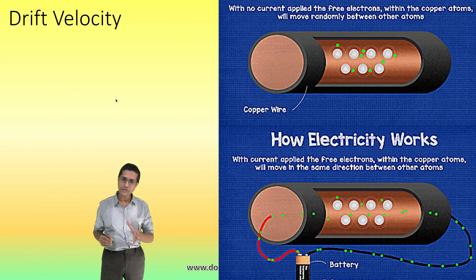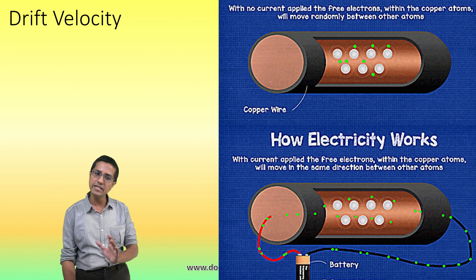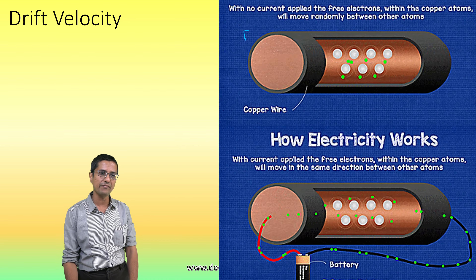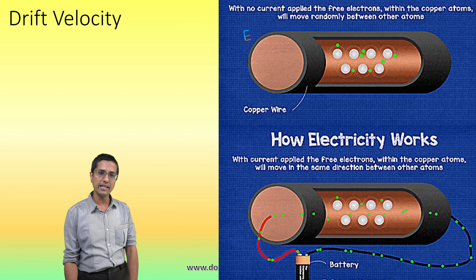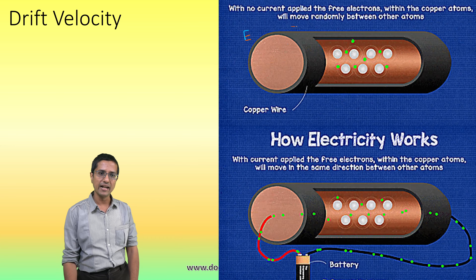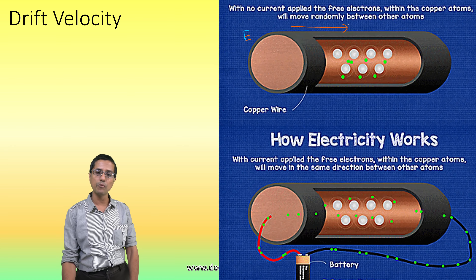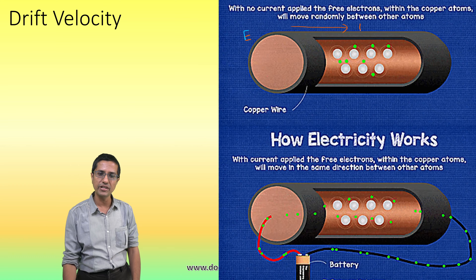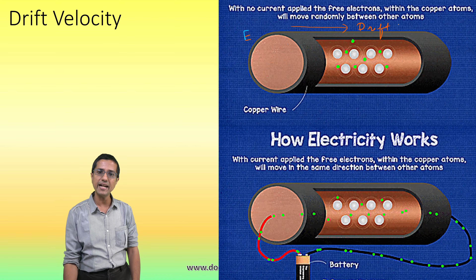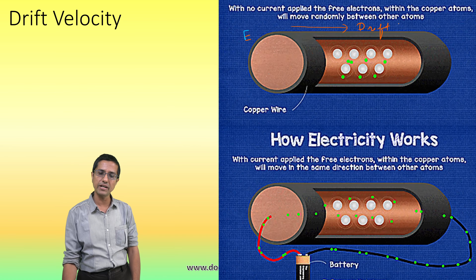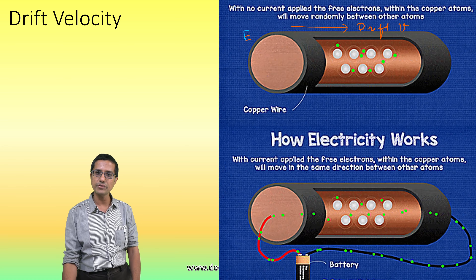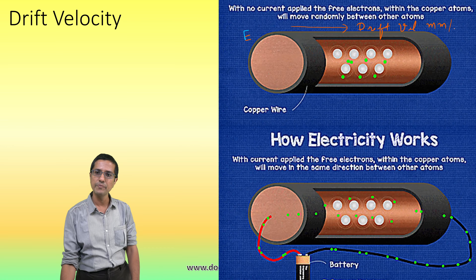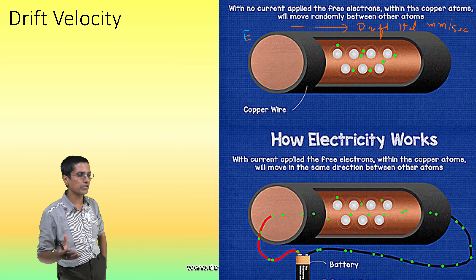This question is related to drift velocity, which we have already discussed in a previous class. The key idea is that as soon as I apply an electric field to the conductor, the electrons inside start having a net velocity in one direction. Most of their velocity is still random, but they have a net component called drift velocity — this is of the order of millimeters per second, so it is very, very small.